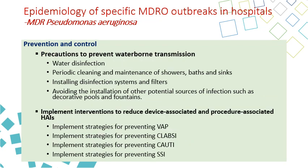For preventing waterborne transmission, ensure water disinfection, periodic cleaning and maintenance of showers, baths, and sinks, because these are places that harbor water vapor with attached Pseudomonas. They should be cleaned and maintained, and may be replaced if old and leaking. Install disinfection systems and filters in the hospital, and avoid installing other potential sources of infection such as decorative bowls and fountains, because they can distribute mist of water containing Pseudomonas aeruginosa.